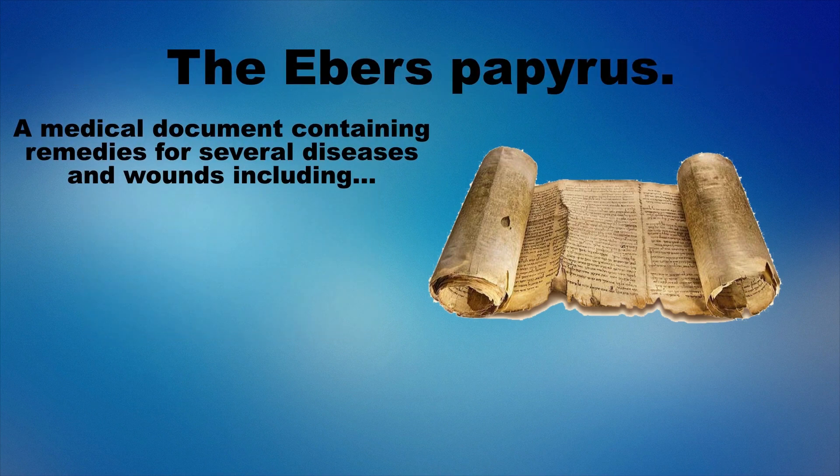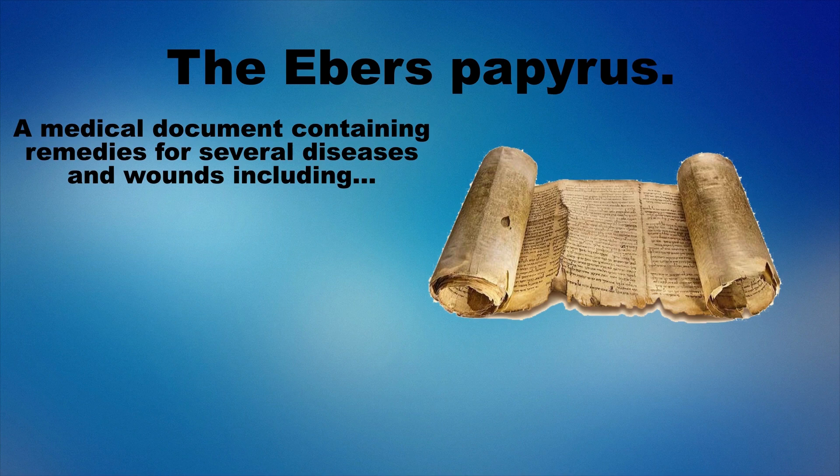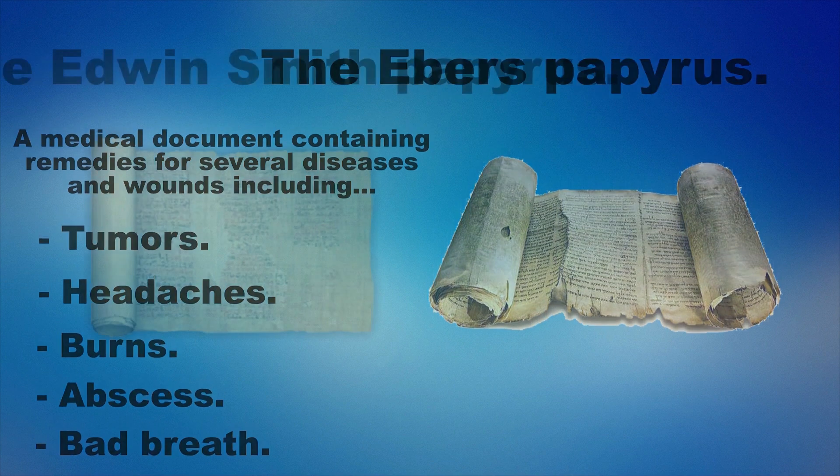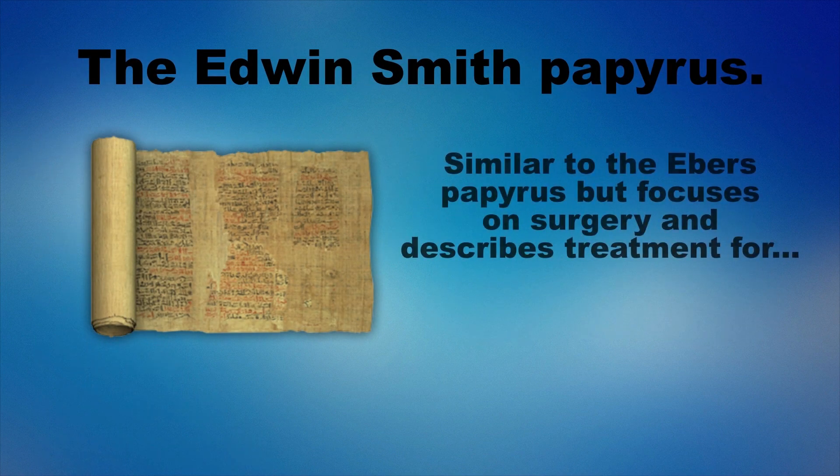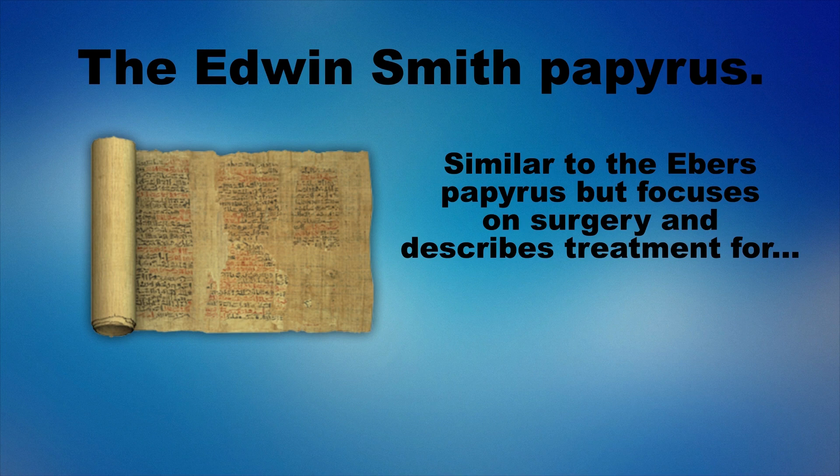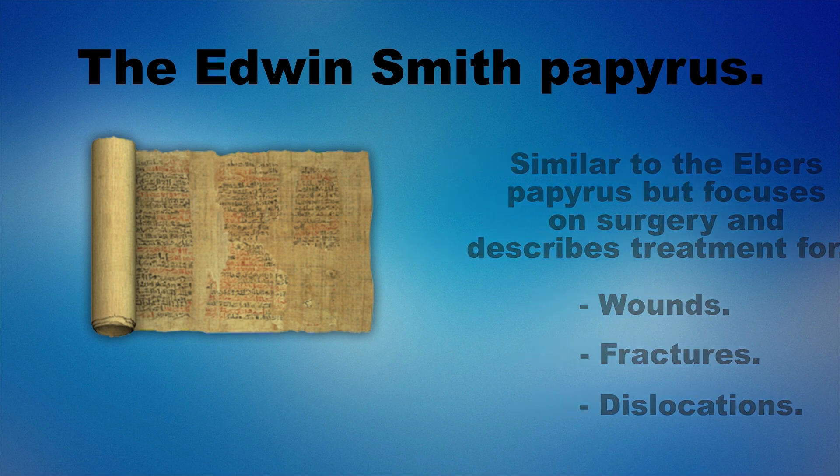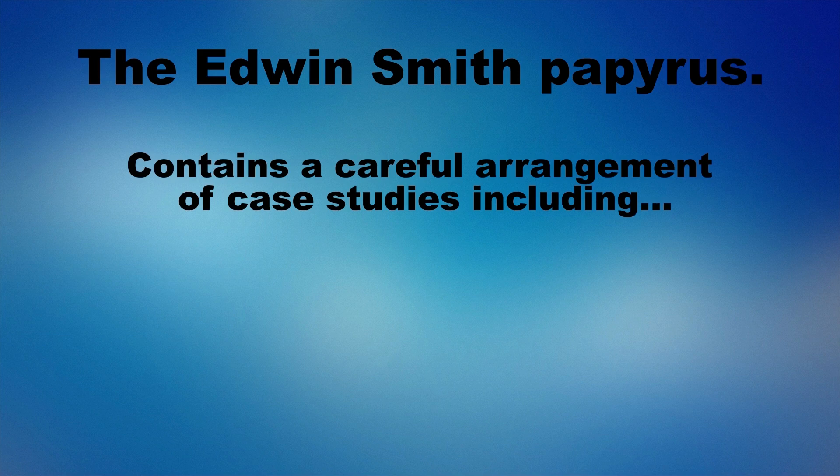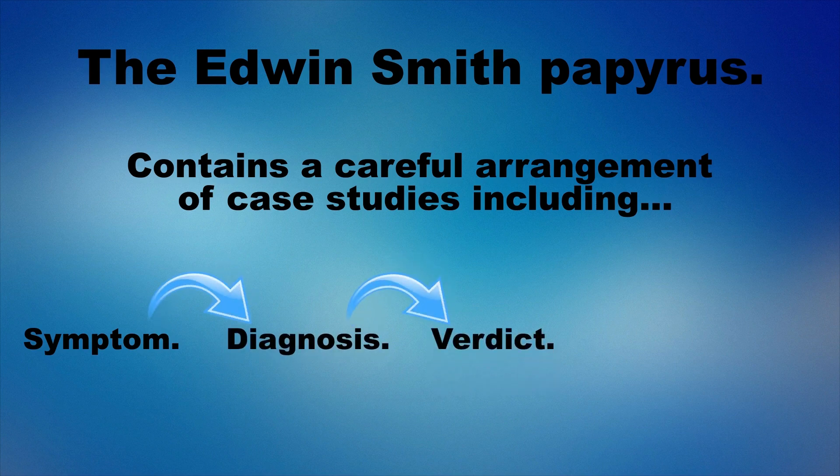The Ebers Papyrus is a medical document containing suggested remedies for several diseases and wounds, ranging from tumors, headaches, burns, abscess and bad breath. The Edwin Smith Papyrus is similar to the Ebers Papyrus, but mainly focuses on surgery and systematically describes the treatment of wounds, fractures and dislocations. The most notable feature of the Edwin Smith Papyrus is that it contains a careful arrangement of case studies, beginning with the description of the problem, proceeding to diagnosis, then to a verdict whether or not the ailment is treatable, and then proceeds to possible treatments.